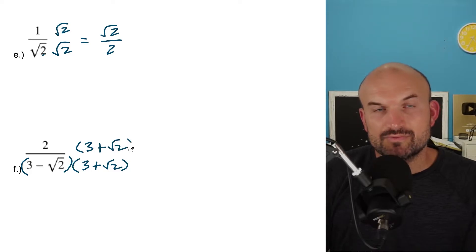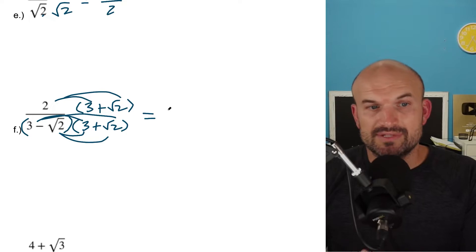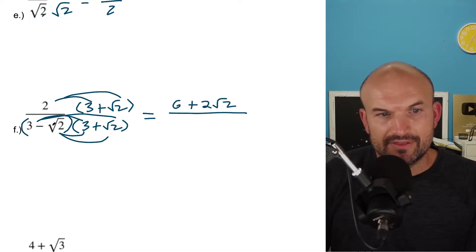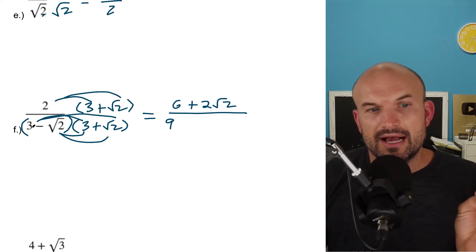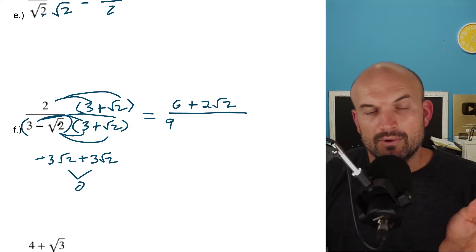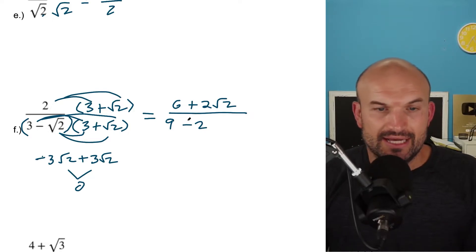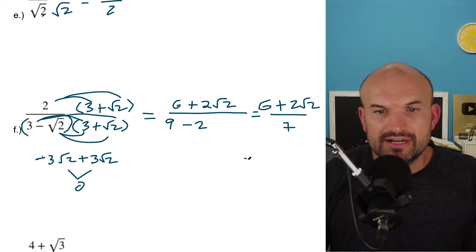We apply the distributive property on top and FOIL on the bottom. So: 2 times 3 is 6, and 2 times square root of 2 is positive 2 square root of 2. On the bottom: 3 times 3 is 9. The inner and outer terms — 3 times negative square root of 2 is negative 3 square root of 2, and 3 times positive square root of 2 is positive 3 square root of 2 — those add to 0. Negative square root of 2 times positive square root of 2 is negative square root of 4, which is negative 2. So we get (6 + 2√2) over (9 − 2), which is (6 + 2√2) over 7. You could also write that as 6/7 plus 2√2/7.